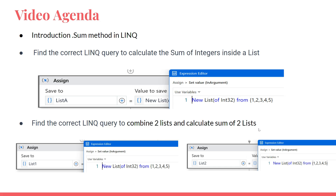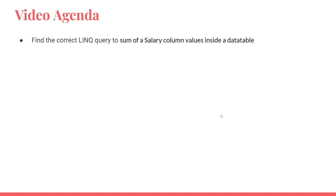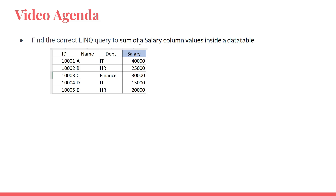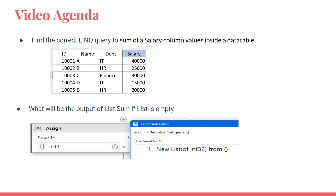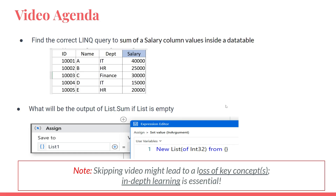Second, find the correct LINQ query to combine two lists and calculate the sum — for example, list one contains one two three four five and list two also contains one two three four five. How can you combine and calculate the sum? We will also see how to sum a salary column inside a data table, and what the output will be if the list is empty. All these interesting questions you will learn in this video, so do not skip it.